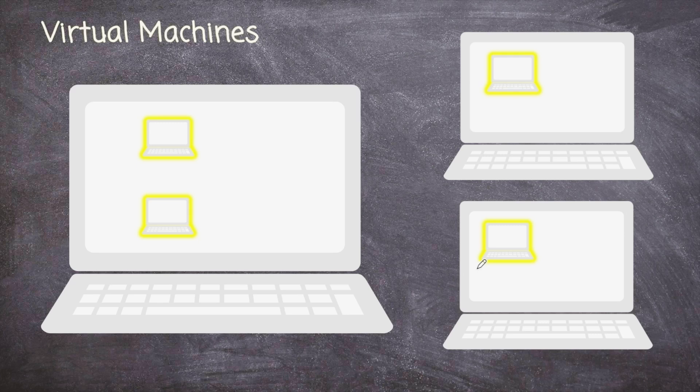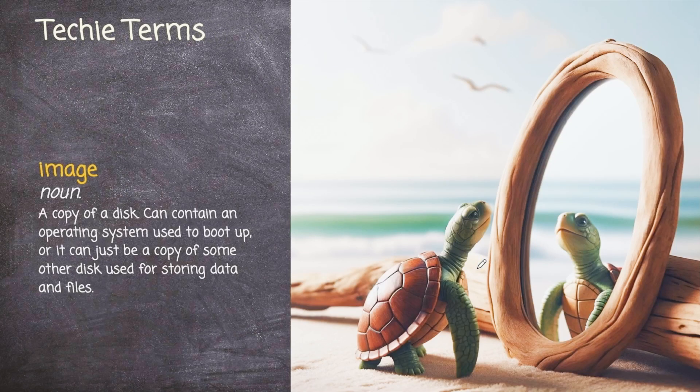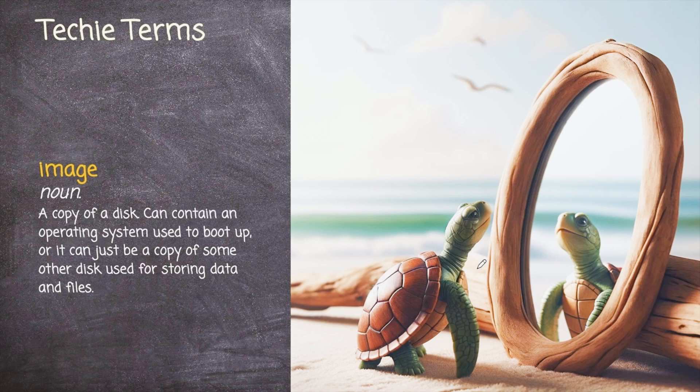Well, there is this concept called an image. That brings us to our first techie term of this skill, an image. It's just a bit for bit copy of a disk. Now that disk can be used to boot up a computer or boot up a virtual machine into an operating system, or it can be just some data that we have on this disk.